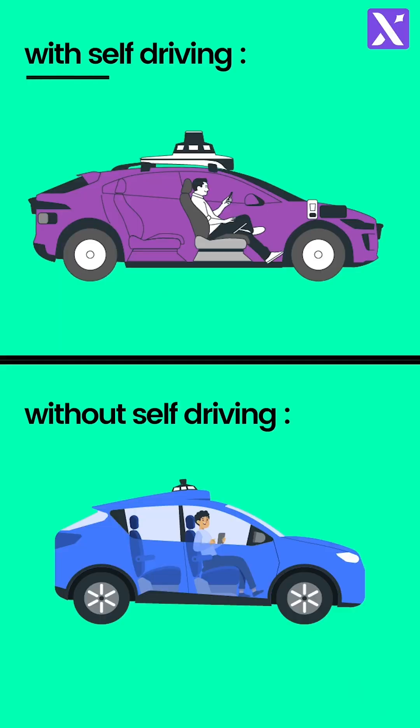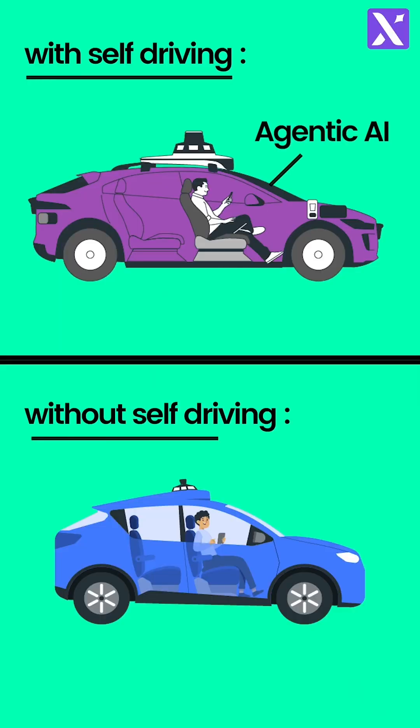In this case, the car with the self-driving feature is an agentic AI, and the one without self-driving features — but still a smart car — is an AI agent.